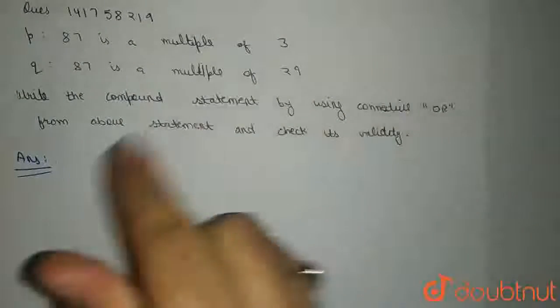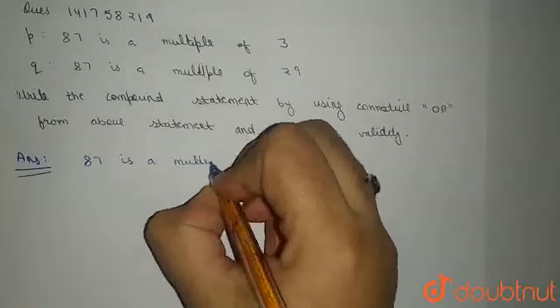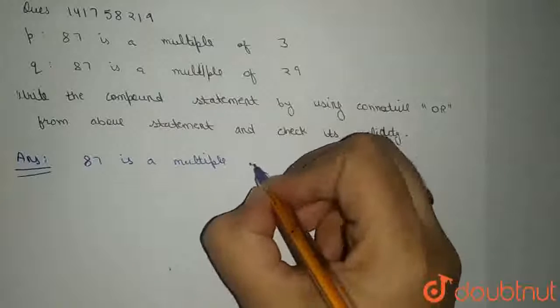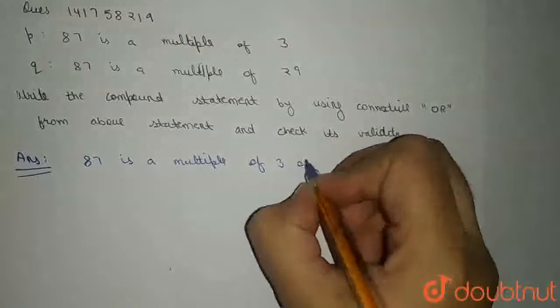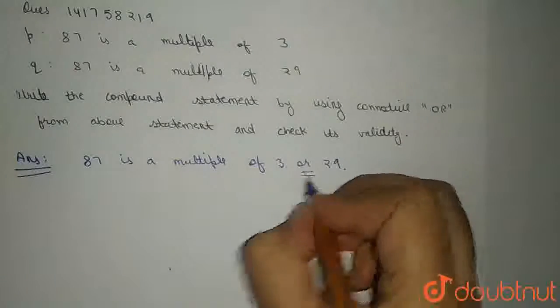Now, P and Q को हमें OR से connect करना है. 87 as a multiple of, this thing is common in P and Q. So, हम इसको एक ही बार लिखेंगे and it will be 87 as a multiple of 3 or 29. So, ये इसका compound statement होगा.